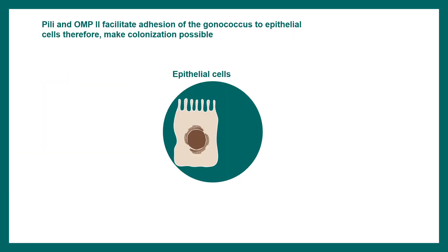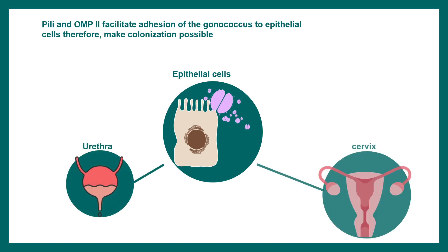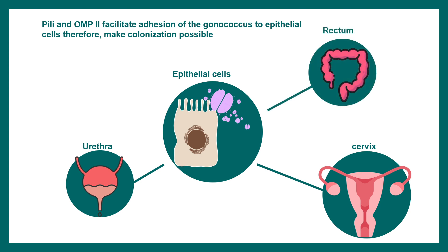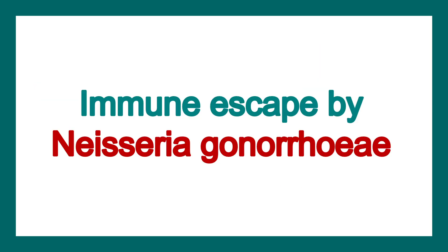Neisseria gonorrhea can dock onto epithelial cells with the help of their Pili and OMP2 protein. This facilitates the bacteria to dock into several epithelia like the urethra, cervix, rectum, or even conjunctiva. It can also modulate the immune system.